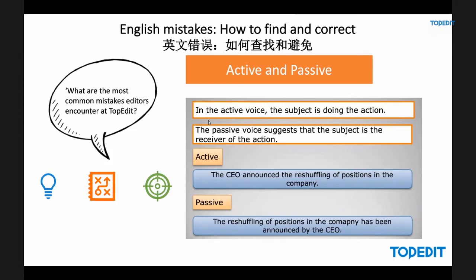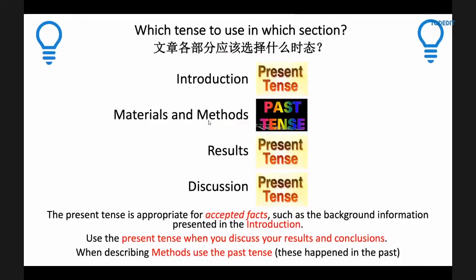Here's active and passive voice. In the active voice, it's the subject doing the action: 'We are doing the experiment,' 'We collected data,' 'We filled the Bunsen burner,' 'We prepared the research.' The passive voice suggests that the subject is the receiver of the action: 'The CEO announced the reshuffling of positions in the company' versus 'The reshuffling of positions in the company has been announced by the CEO.'